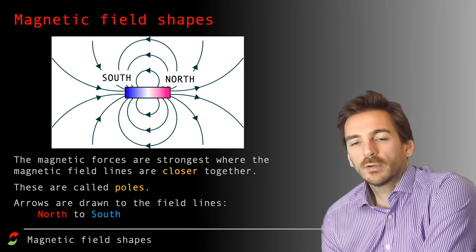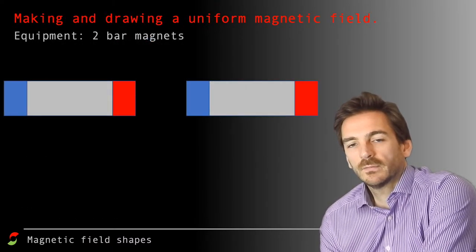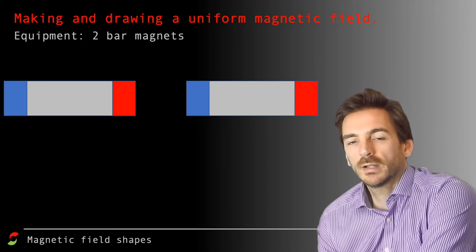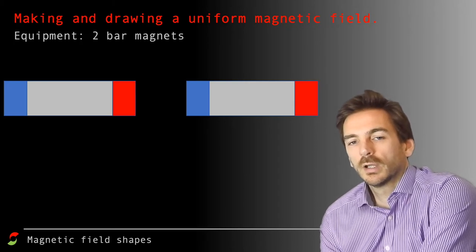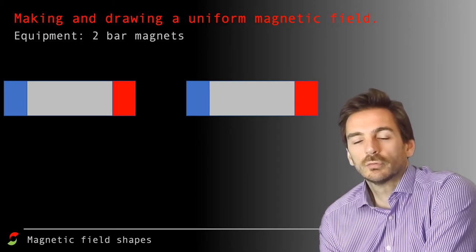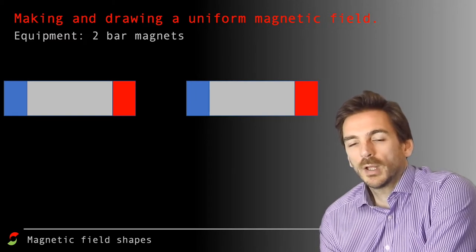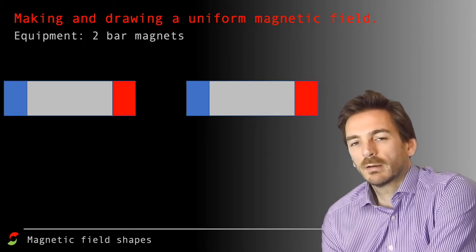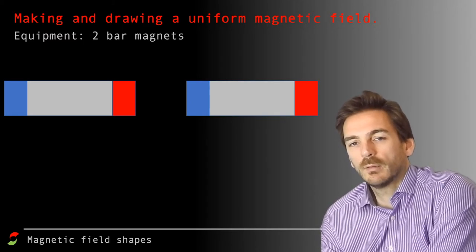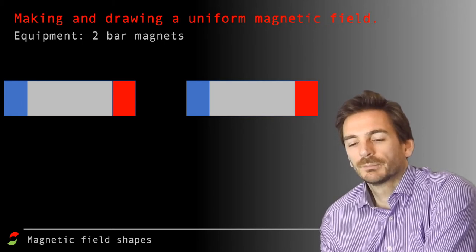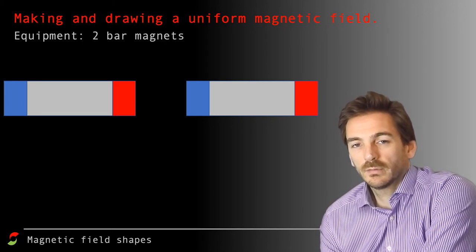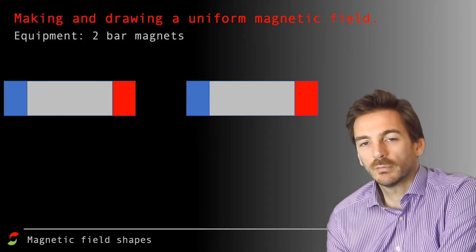So the last thing is, how do we produce a uniform magnetic field? Now, if you remember back to electric fields, electric field lines are uniform. We draw them uniformly by drawing them evenly spaced and parallel. So how do you get evenly spaced and parallel magnetic field lines? Well, you need two bar magnets to start off with, and you need to have opposing poles.